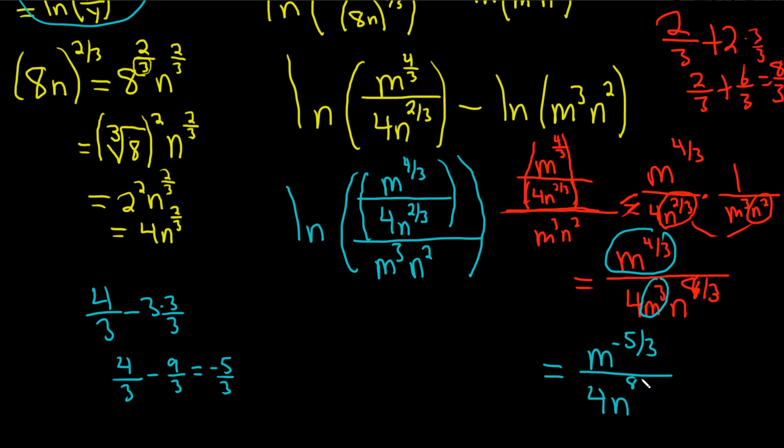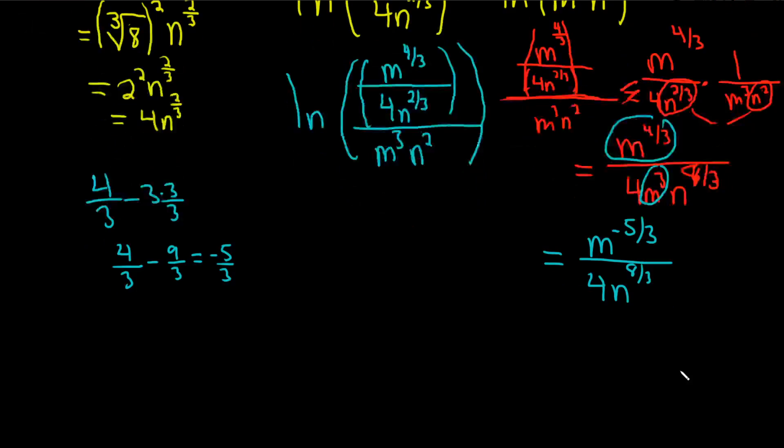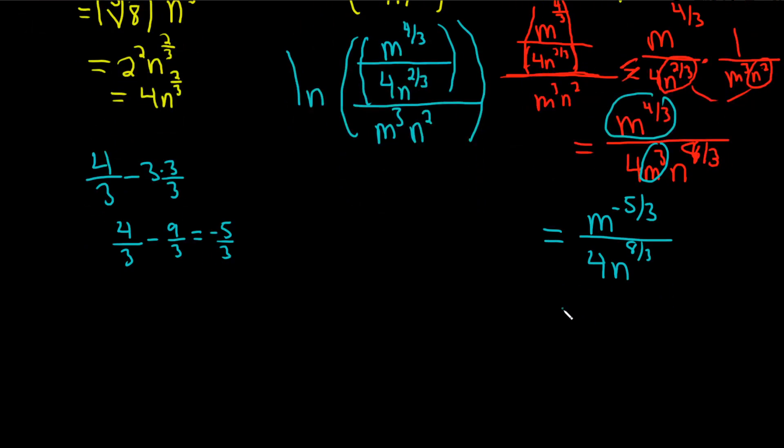So this will be m to the negative five-thirds over 4n to the eight-thirds. There we go. Now we can bring this down.